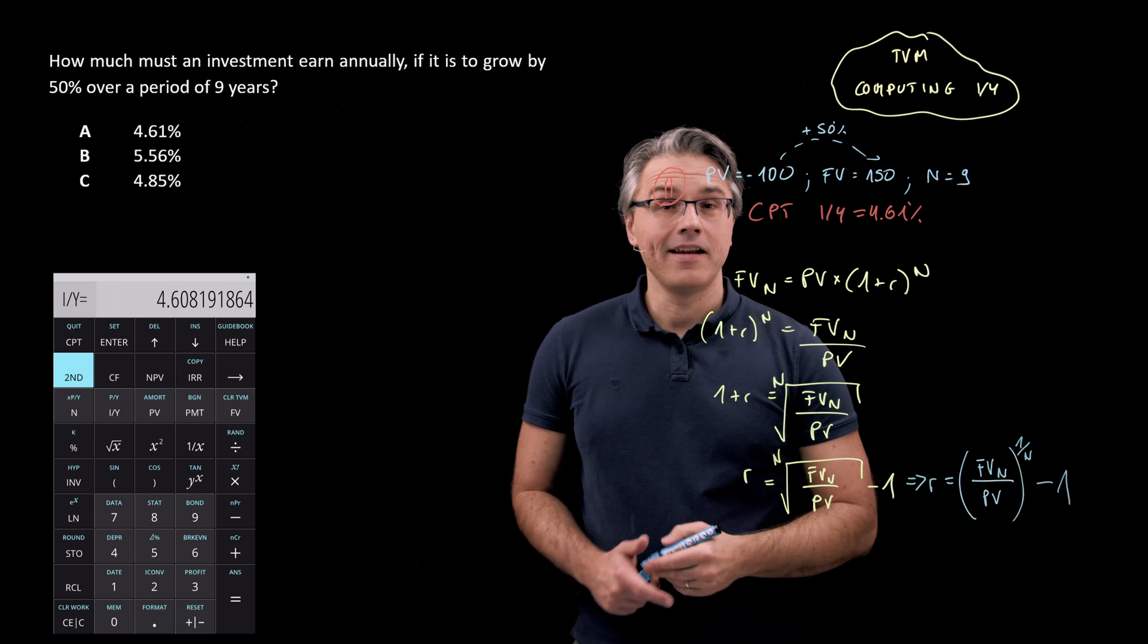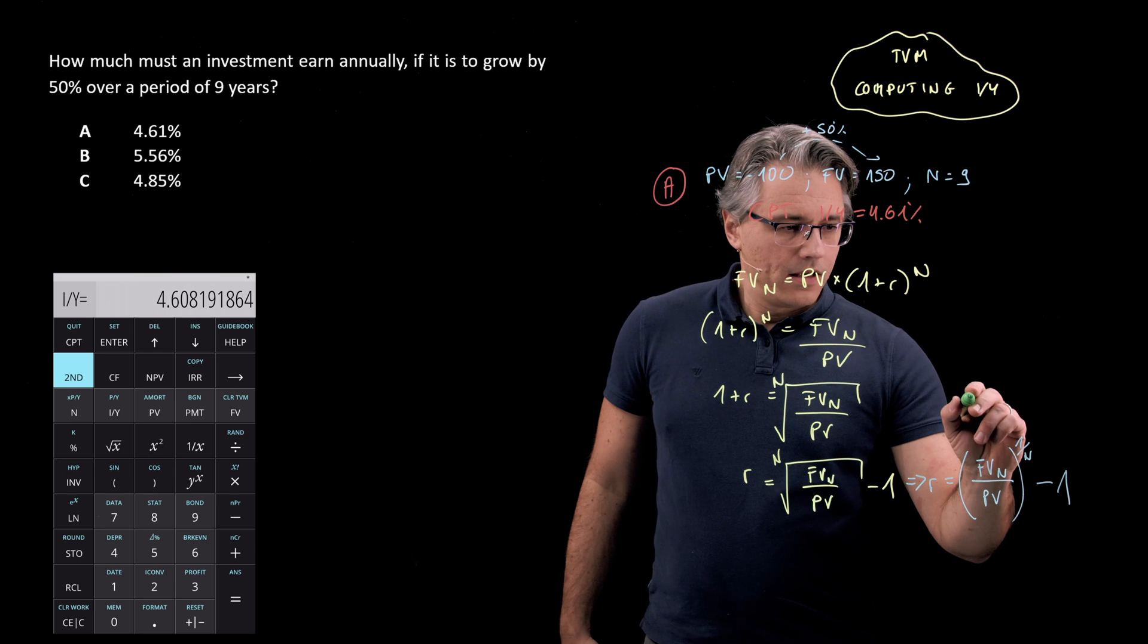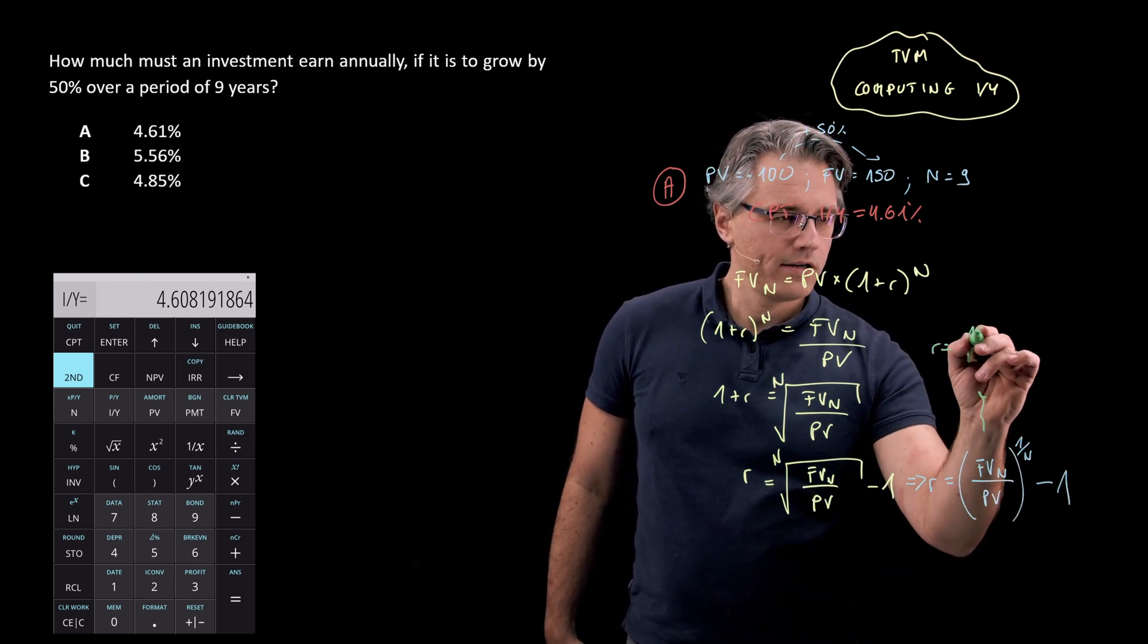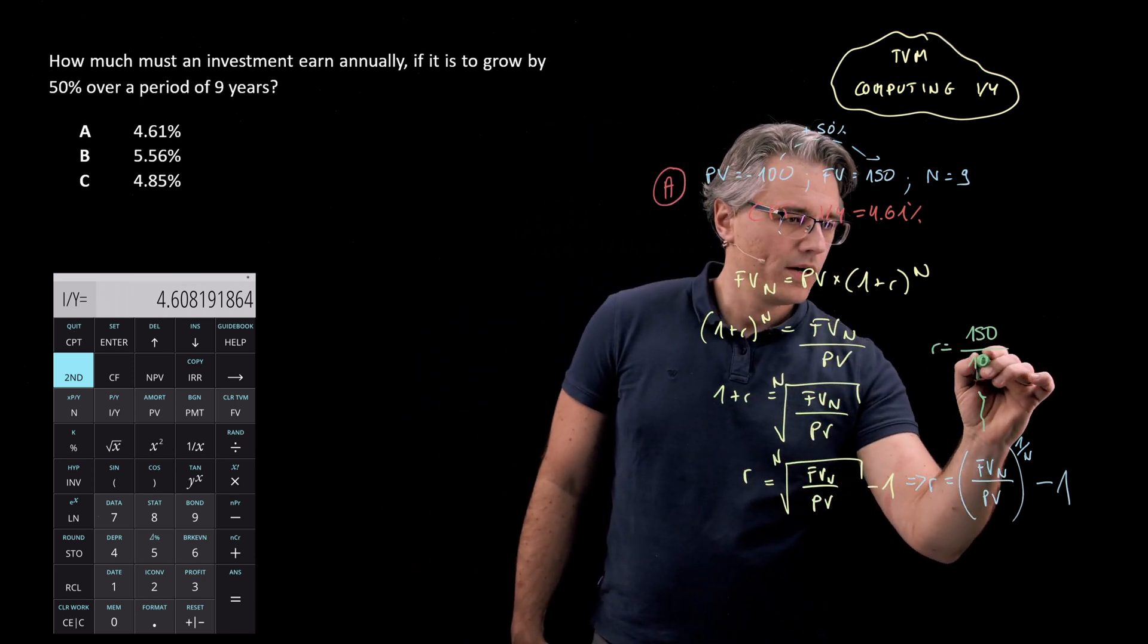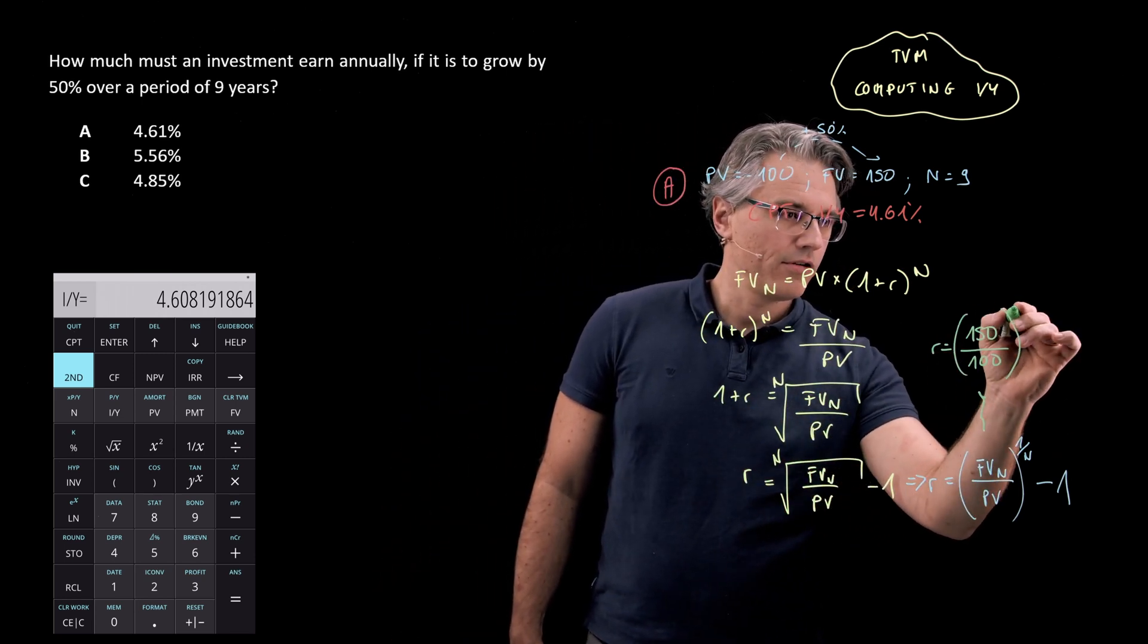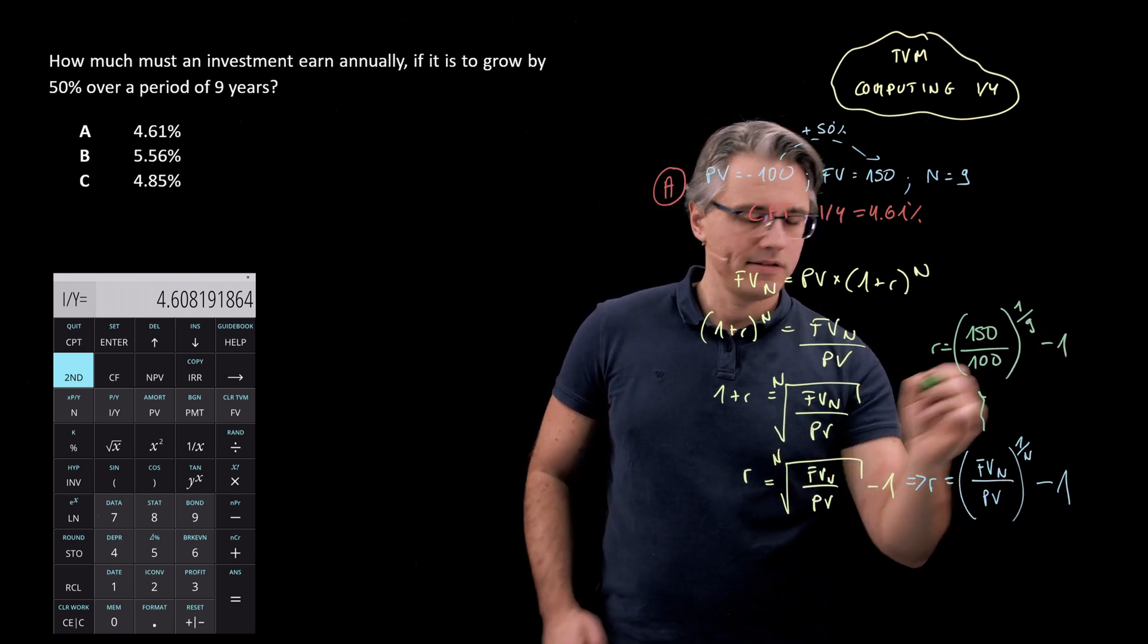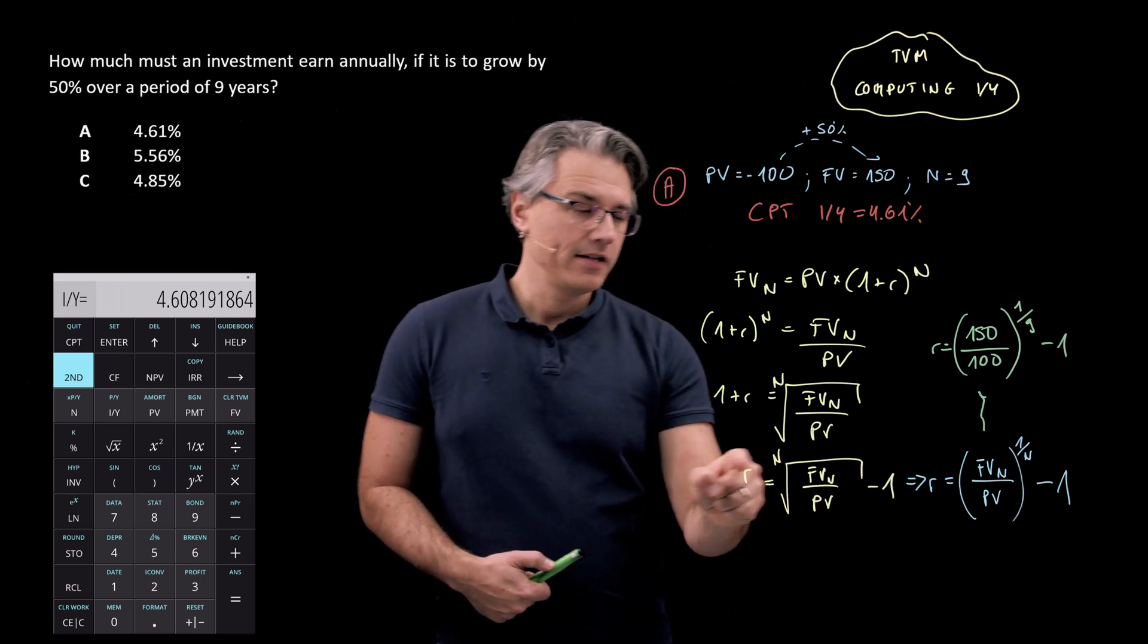So basically, in our little scenario, what this becomes is R equals 150 divided by 100 to the power of one over N, one over nine minus one. Remember that taking the root to the power of N, or with an exponent of N...